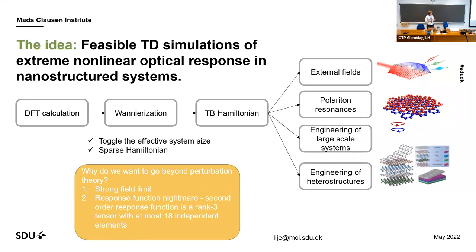The idea behind this project was that we would like to do feasible time-dependent simulations of extreme non-linear optical phenomena in nanostructure systems — nanoribbons, nano-islands, twisted layers, stacked layers — basically systems with large supercells, and how to do this in an efficient way. I had the idea to use Wannierization because then we can really toggle the effective system size, choose how many bands we need, and also get sparse Hamiltonians which can help with the memory of these large systems.